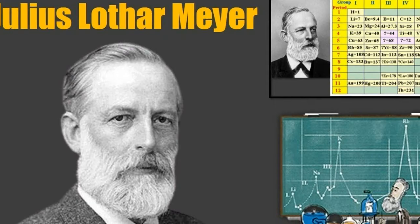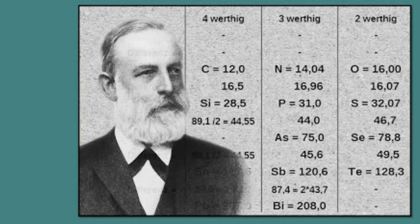Google is celebrating Julius Lothar Meyer's 190th birthday with a Doodle in the U.S. and a few other countries. Julius Lothar Meyer, born 19 August 1830 and died 11 April 1895, was a German chemist. He was one of the pioneers in developing the first periodic table of chemical elements.